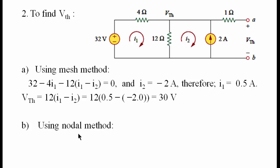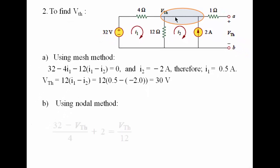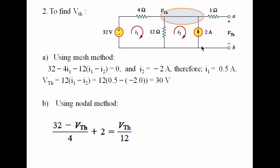We can also solve using the nodal method. We can see that we have only one node here that needs to be solved, so we need only one equation to find the Thevenin's voltage. Now we need to apply KCL, or Kirchhoff's current law, to this node. This current here is input to the node, so we write (32 minus V-Thevenin) over 4. The 2 amperes current is also entering the node, so we write it on the same side of the equation. The current flowing in the 12 ohms resistance is leaving the node, and its value is V-Thevenin minus 0, because this is the reference or ground node, so V-Thevenin over 12.